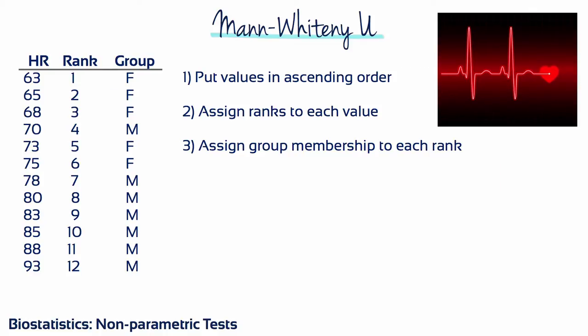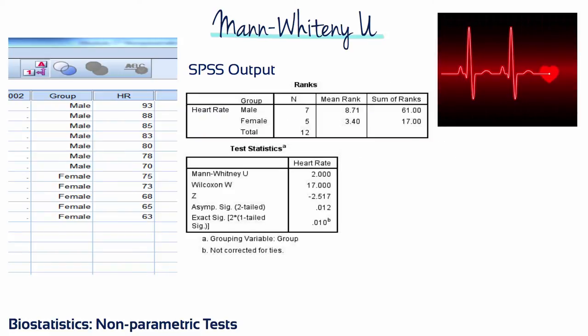The Mann-Whitney U test is calculated by converting scores to ranks and comparing the ranks between groups. The first step is to combine the groups and order the entire sample of scores in ascending order from lowest to highest, then place the rank adjacent to each score. By replacing scores with ranks, if there are any outliers their influence is reduced — for instance, if the heart rate of 93 was changed to 103, it would still have the same rank of 12. Next, assign group membership to each rank. The ranks are then used to calculate the test statistic. If there is no difference between the groups, we would expect the mean ranks between groups to be about the same.